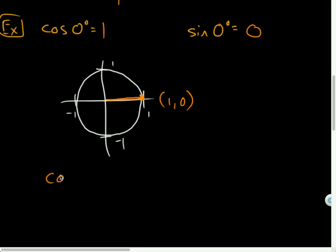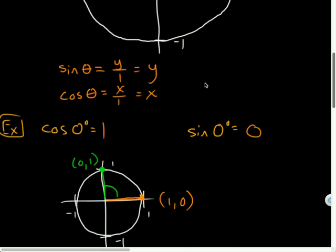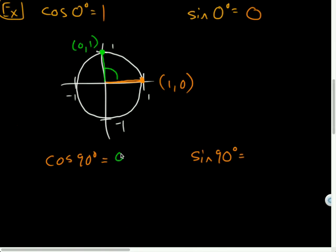What would cosine of 90 be, and what is sine of 90? Here's a 90 degree angle, and on the unit circle the coordinates of this point are (0, 1). Cosine is always equal to the x-coordinate, so cosine of 90 degrees is 0. Sine of 90 degrees is 1 — I went up 1 unit on the y-axis but didn't go over at all.